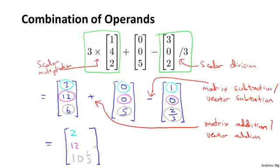And so this gives me a 3 by 1 matrix, which is also just called a three-dimensional vector, which is the outcome of this calculation over here.